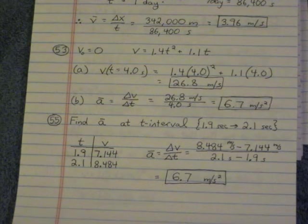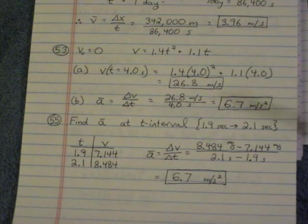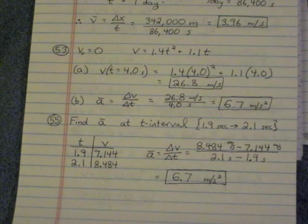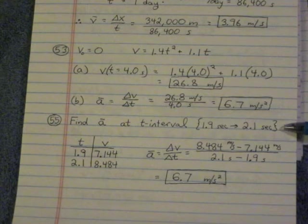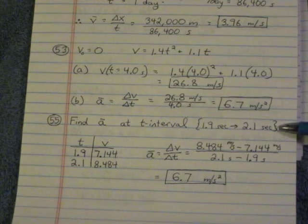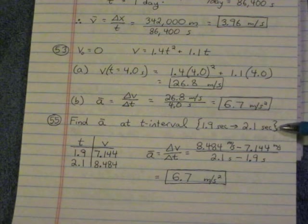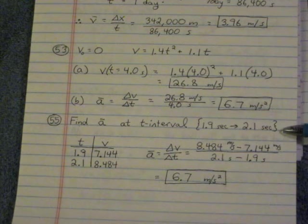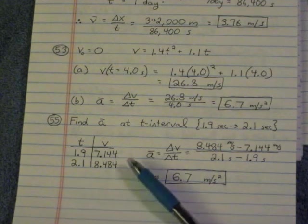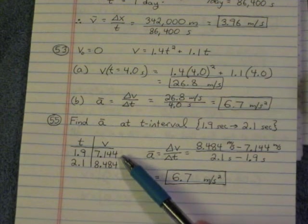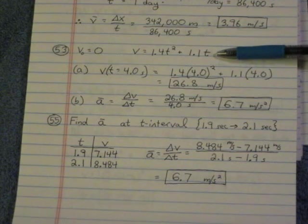Number 55. It says estimate the instantaneous acceleration at 2 seconds. So the way you estimate instantaneous acceleration is you find average acceleration over a small t interval, a time interval. Now, I chose between 1.9 and 2.1 seconds. You might choose 1.95 and 2.05. You might do 1.99 and 2.01. But have it a small interval that's symmetric around 2 seconds. This is the one I chose. So when I did that, I found the time for 1.9, or the velocity at that time, by plugging into the original formula. So you plug in 1.9 into this formula for velocity.